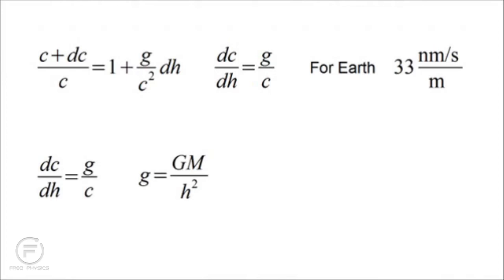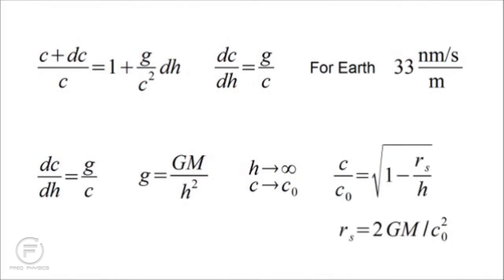We have this basic result that the change in speed of light with change in height is g over c. Newton's law of gravitation says that g falls off as 1 over the distance from the center of the object squared — that is, little g equals big G times the mass m over h squared. Plugging that in, and assuming that as h goes to infinity the speed of light takes on some value c0 — the speed of light in empty space, 300 million meters per second — you can solve for the speed of light as a function of height from the center of the object. The result is that the speed of light as a fraction of c0 is the square root of 1 minus rs over h, where rs equals 2GM over c0 squared.